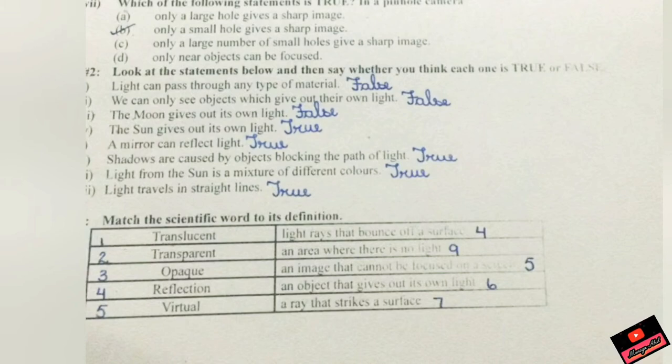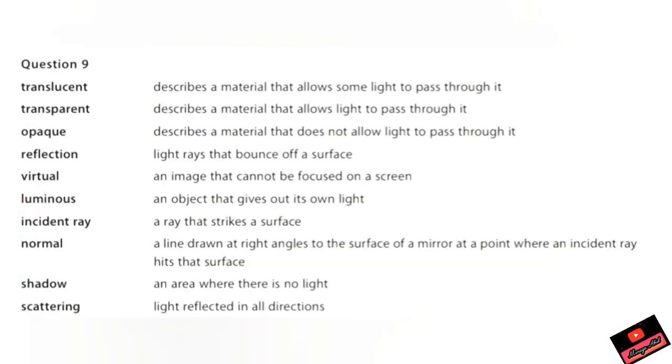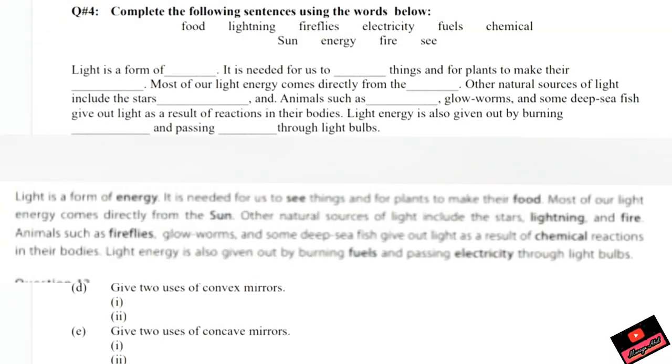Question number three is: match the scientific word to its definition. I have solved it for you. Translucent describes a material that allows some light to pass through it. Transparent describes a material that allows light to pass through it. Opaque doesn't allow light to pass through it. Reflection: light rays that bounce off a surface. Virtual: an image that cannot be focused on a screen. Luminous: that gives off light. Incident: the ray that strikes on the surface. Pause this video and write the answers.